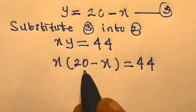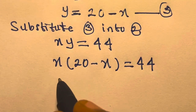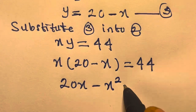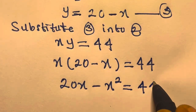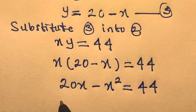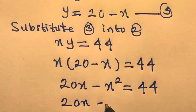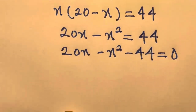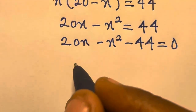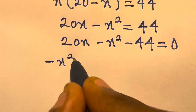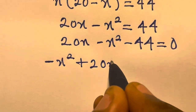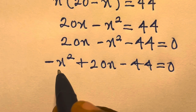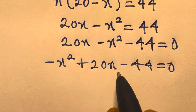So then we can just multiply out these brackets. We have x times 20, giving us 20x minus x times x, which is x squared, equals 44. So we can bring this 44 to this side, giving us 20x minus x squared minus 44 equals 0. By rearrangement, we can have minus x squared plus 20x minus 44 equals 0.